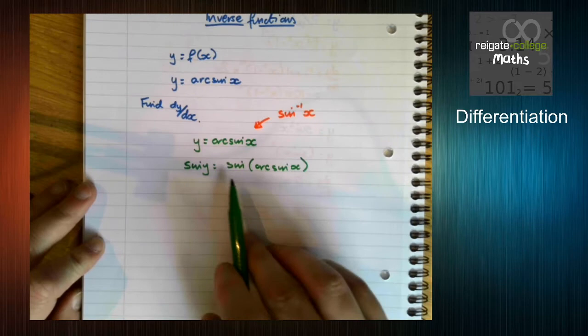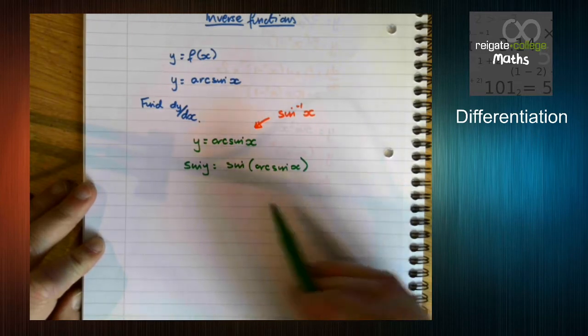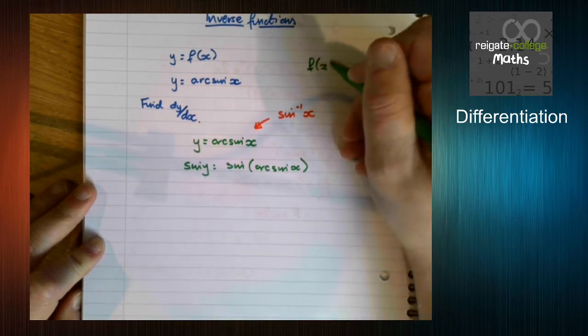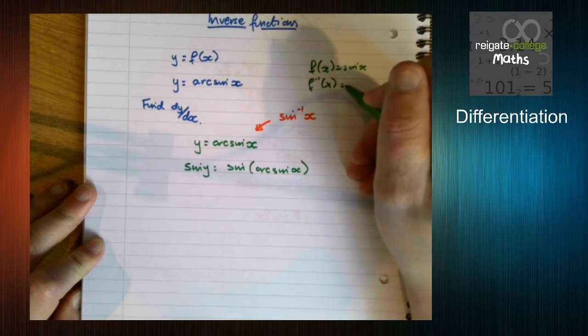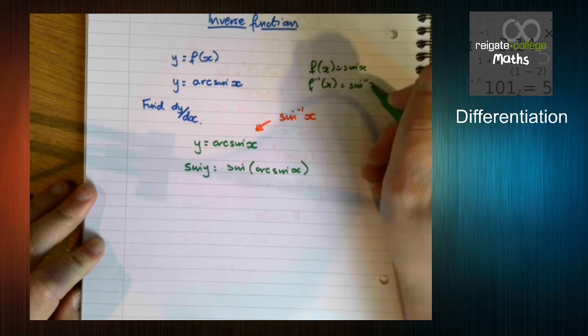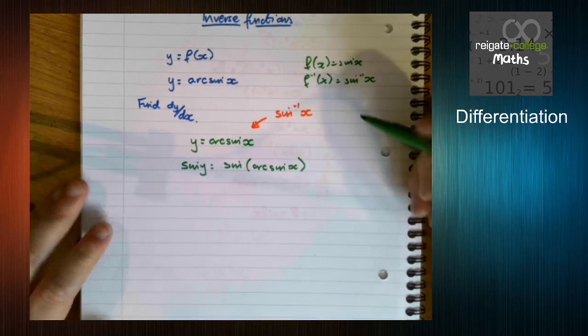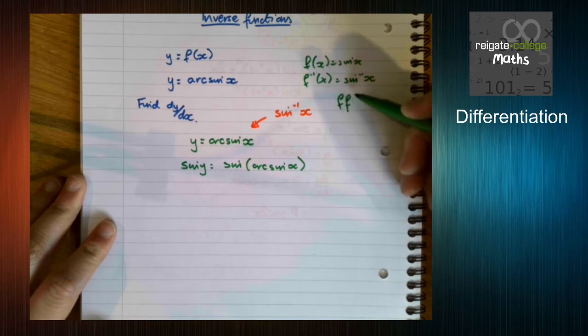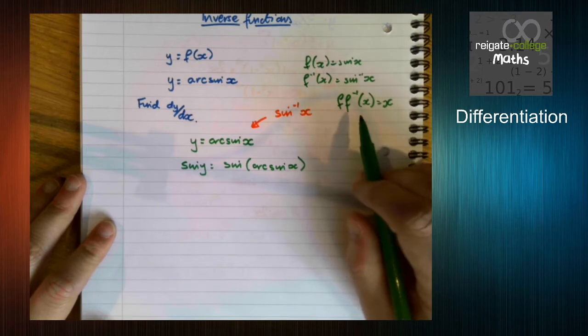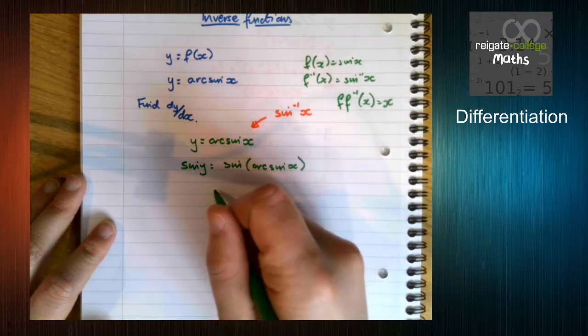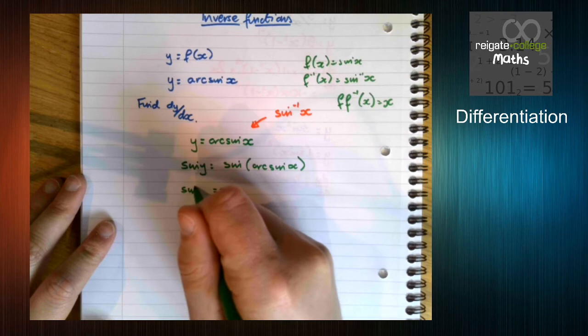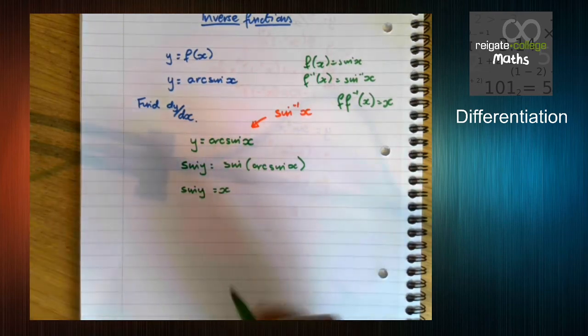OK, because if we do this, remember, if f(x) is sin(x), then f inverse is inverse sine, which is arcsin. The key property that we're using here is that if you do the composite function of a function and its inverse, you just get back to x. So here, this is just x. So we now have the relationship x = sin(y).